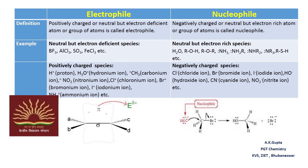Now let us discuss the differences between electrophile and nucleophile. The definition of electrophile is: electrophiles are positively charged or neutral but electron deficient atoms or groups of atoms. Nucleophile is defined as negatively charged or neutral but electron rich atoms or groups of atoms.